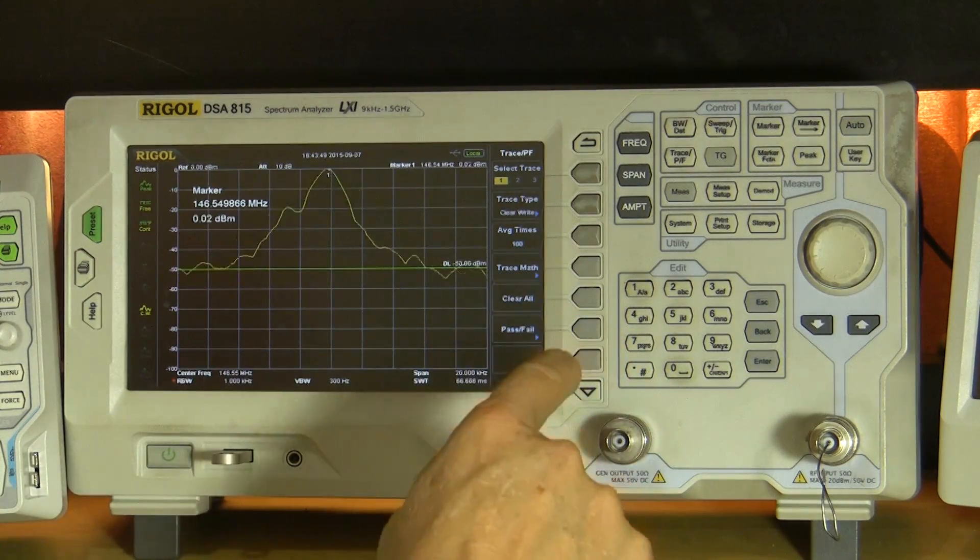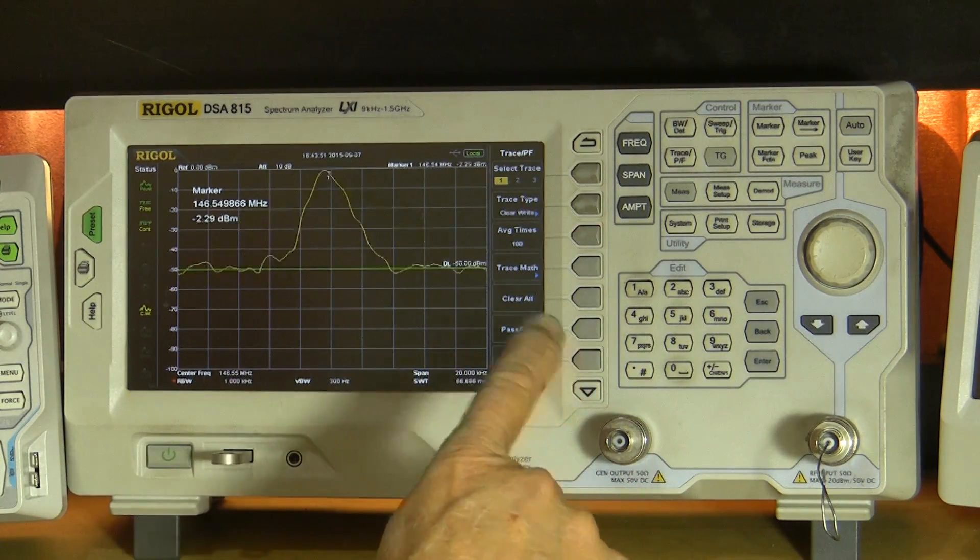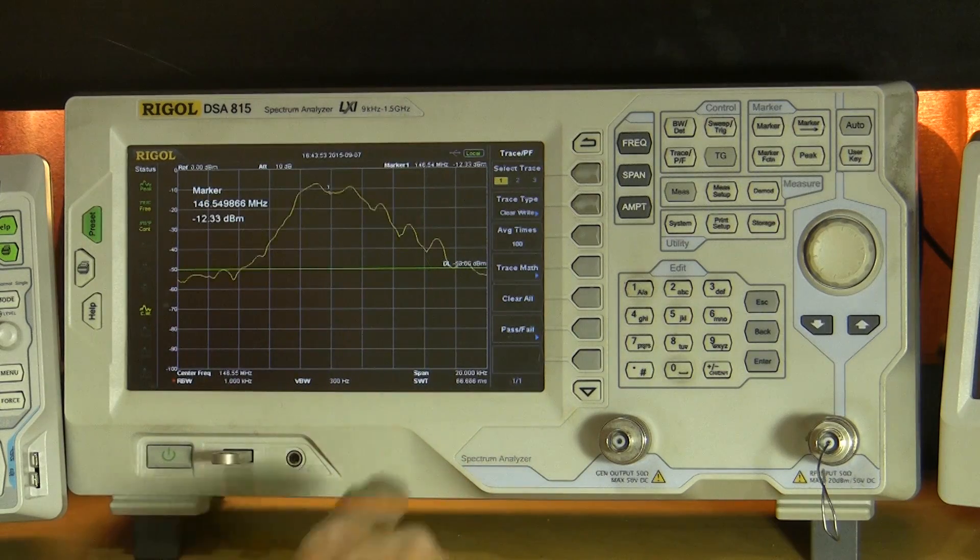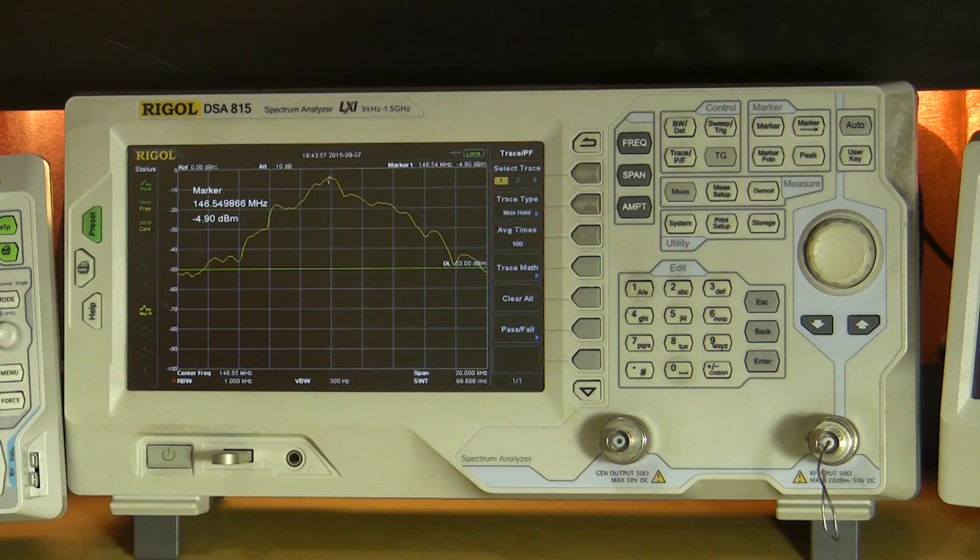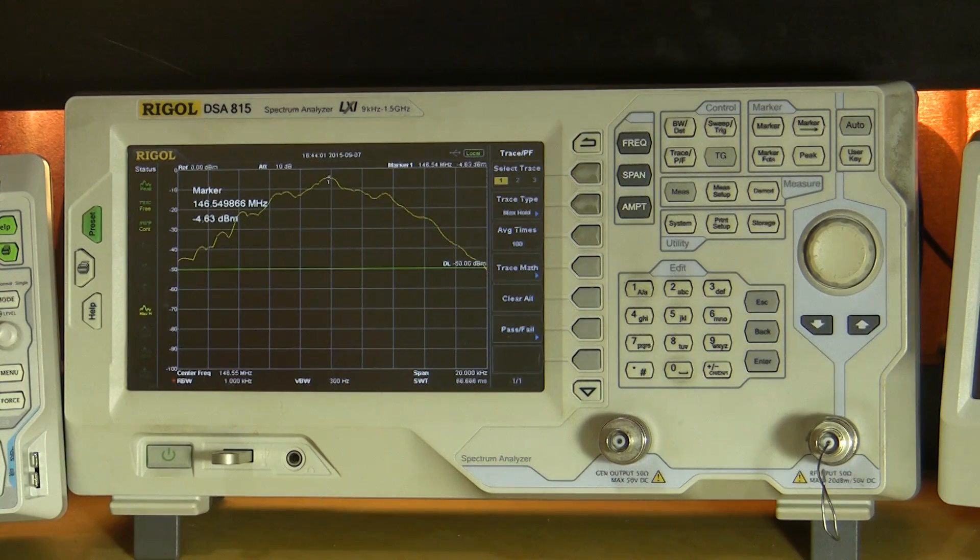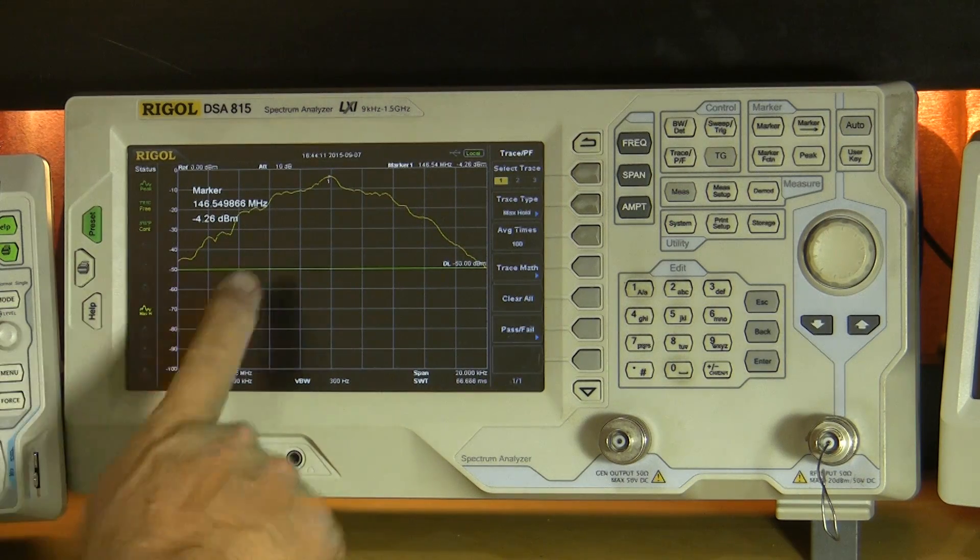As I modulate you can see the modulation, but I need to really put this trace into max hold so we can see what the modulation looks like over time. So here's a standard FM wideband signal according to IARU in modern parlance. So that's what it looks like down to about 50 dB, which is this reference line.